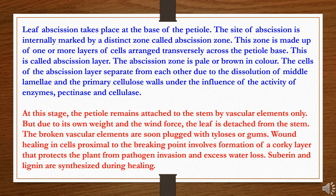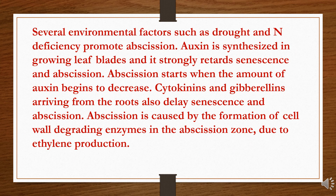Wound healing in cells proximal to the breaking points involves formation of a corky layer that protects the plant from pathogen invasion and excess water loss. Suberin and lignin are synthesized during healing. Several environmental factors such as drought and nitrogen deficiency promote abscission. Auxin synthesized in growing leaf blades strongly retards senescence and abscission. Abscission starts when the amount of auxin begins to decrease. Cytokinins and gibberellins arriving from the roots also delay senescence and abscission. Abscission is caused by the formation of cell wall-degrading enzymes in the abscission zone due to ethylene production.